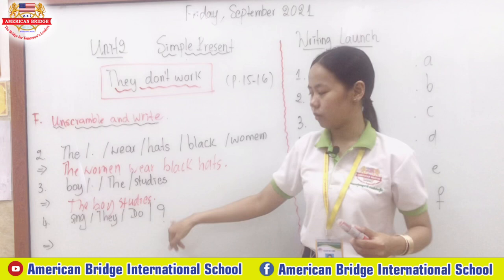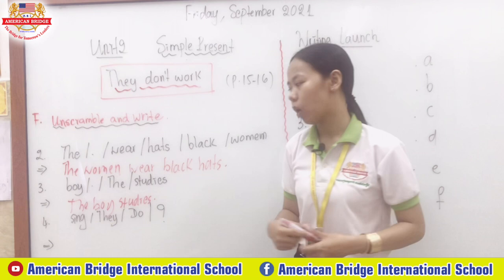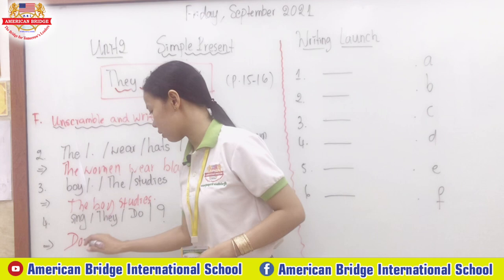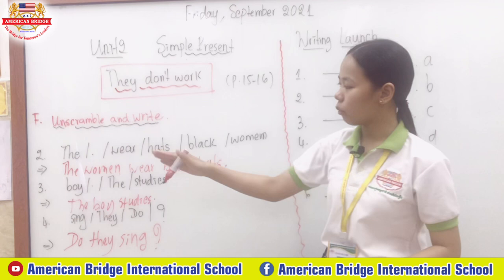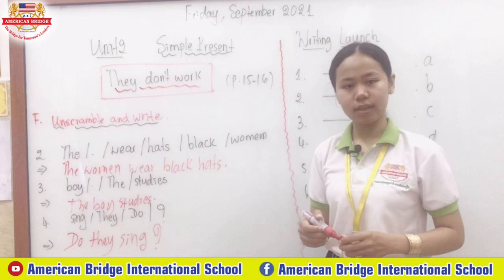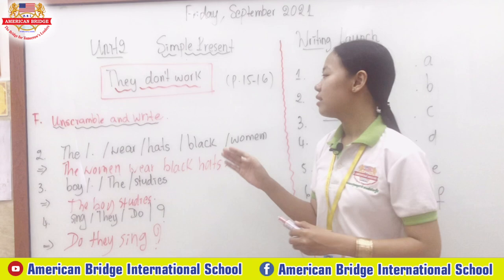How about number four? We have: sing, they, do, and a question mark. It is in question form, so we need to start with the auxiliary verb 'do.' Do they — very good — do they sing? And then a question mark. So the answers are: number one — Does he sell fruits? Number two — The women wear black hats. Number three — The boy studies. Number four — Do they sing?